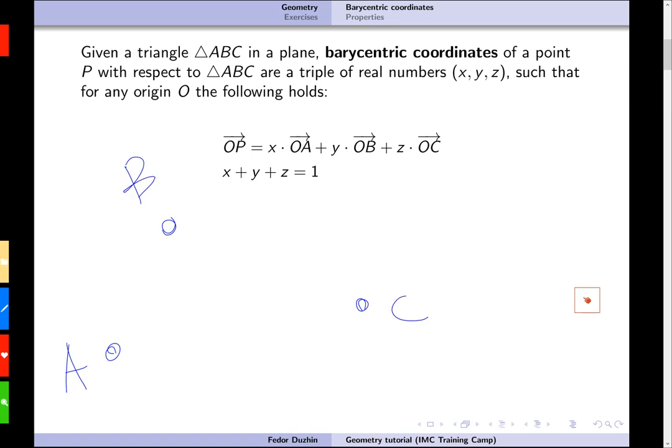And then we have some other point, I don't know, P. Then we can compute barycentric coordinates of the point P with respect to A, B, and C. And it's not going to be a pair of real numbers, but it is going to be a triple of real numbers, such that these two identities hold.